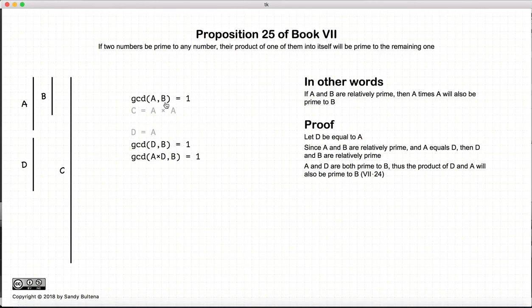Now if a and b are relatively prime, and d and b are relatively prime, then by Proposition 24 of this Book, a multiplied by d will also be relatively prime to b. So d equals a, so a times d is equal to a times a, which is equal to c. So c equals a times d.